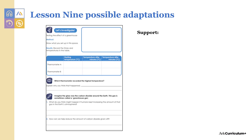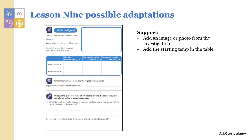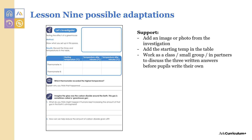To support pupils in lesson nine, you could add an image or photo from the investigation to the space, add the starting temperature into the table, or work as a class, in small groups, or with partners to discuss the three written answers before pupils write down their own. Stretch pupils by asking them to write a definition for greenhouse gases.